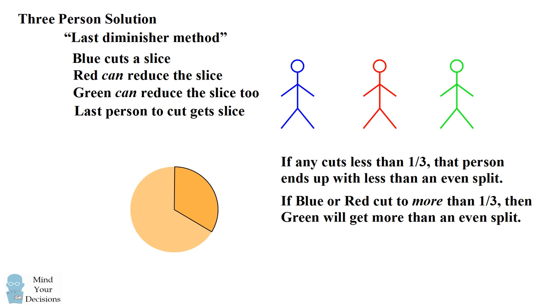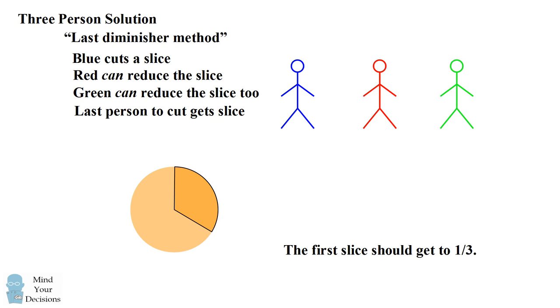So blue or red are actually going to do their best job to make sure the slice gets to be about one-third. And that's why the first slice is going to be basically one-third, and it's going to go to whoever cut it last. So let's suppose that red makes it exactly one-third, and then red gets the slice.